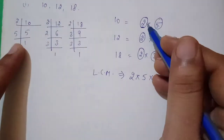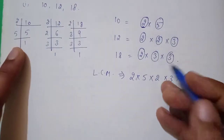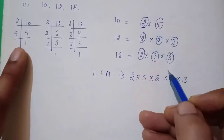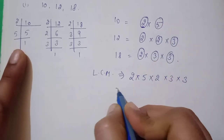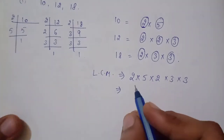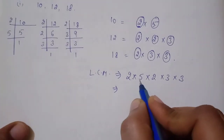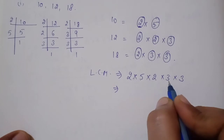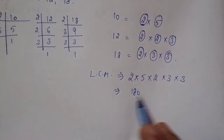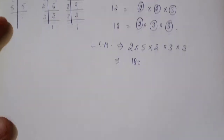So the method is: first take the common factors, and if a factor is not common then include the individual one. For 10, 12 and 18 the selected factors are 2 × 5 × 2 × 3 × 3, giving the answer 2 × 5 = 10, × 2 = 20, × 3 = 60, × 3 = 180. The answer is 180.